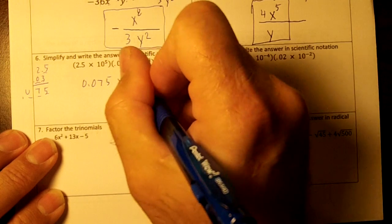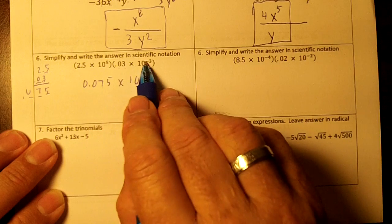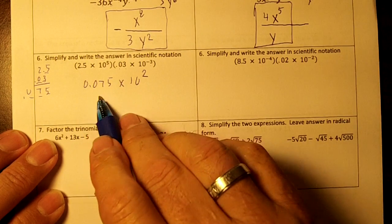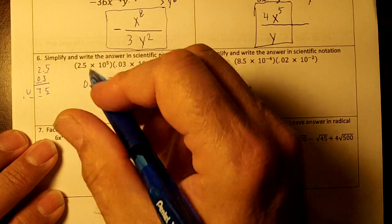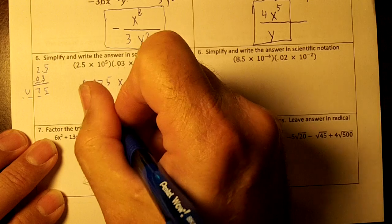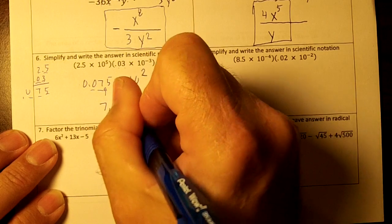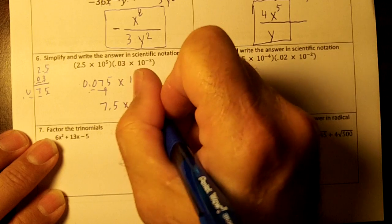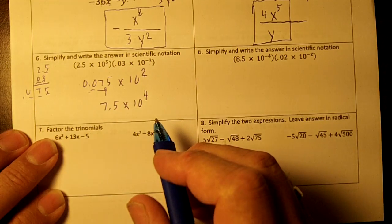Okay, times 10, and you add these exponents up. 5 minus 3 is 2. Now then, this is a positive exponent, so it's going to go to the right, but I have to go to the right two more times to put the answer here, don't I? So this is going to turn into 7.5 times 10. I need two more decimal places to go to the right, so times 10 to the... No,